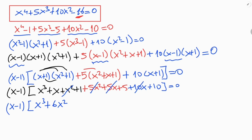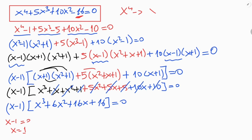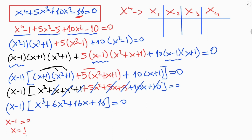Combining terms: 5X, 10X, and X gives 16X, and 1 plus 10 plus 5 gives 16, all equal to 0. That means X minus 1 equals 0, so X equals 1. This is the first root of the equation. We know this equation has four roots: X₁, X₂, X₃, and X₄. We found the first root as X₁ equals 1.